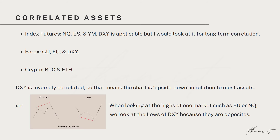As I mainly trade index futures, I only know a few correlated assets. For index futures, I refer to NQ, ES, and YM. DXY is also applicable, but I would look at it for longer-term correlations. Another use case for DXY that I use personally is if NQ, ES, and YM are not providing immediate feedback, I will refer to the dollar index as well.